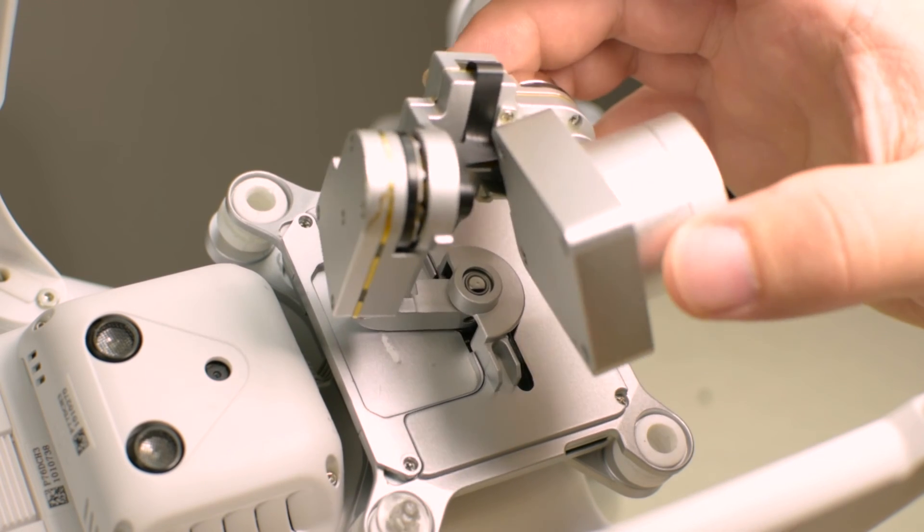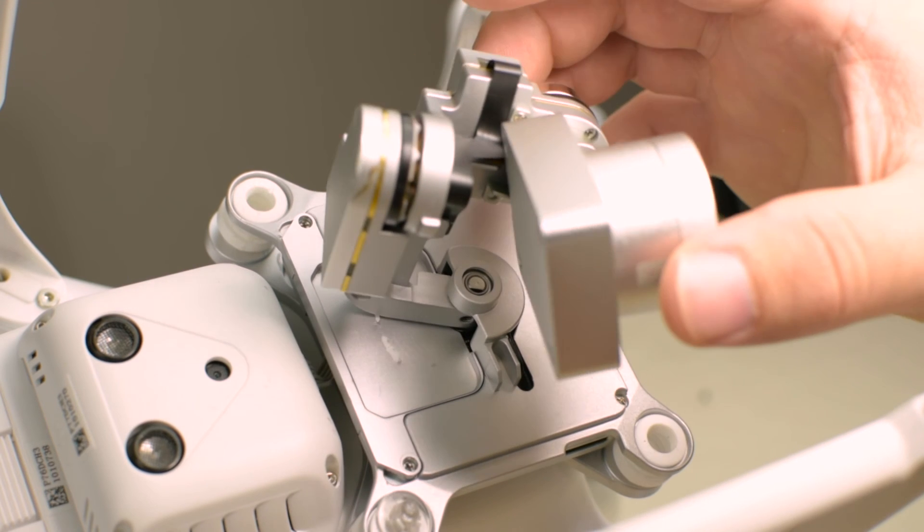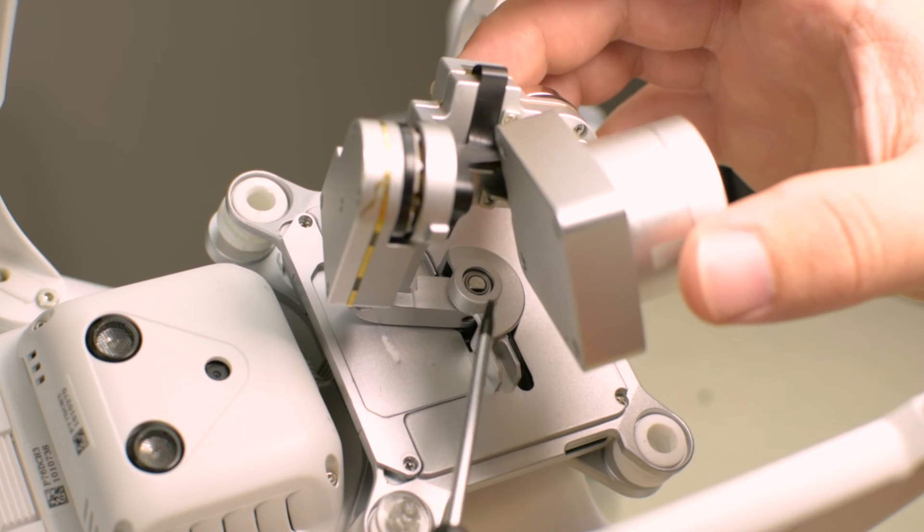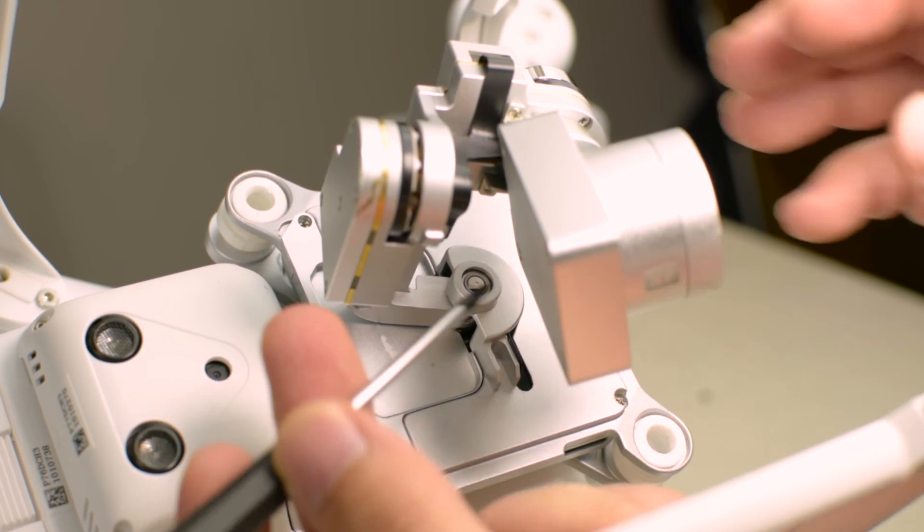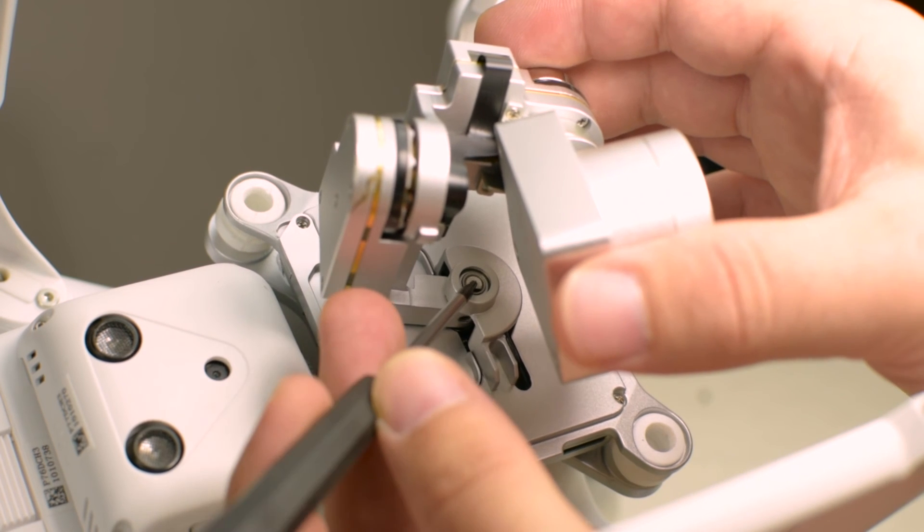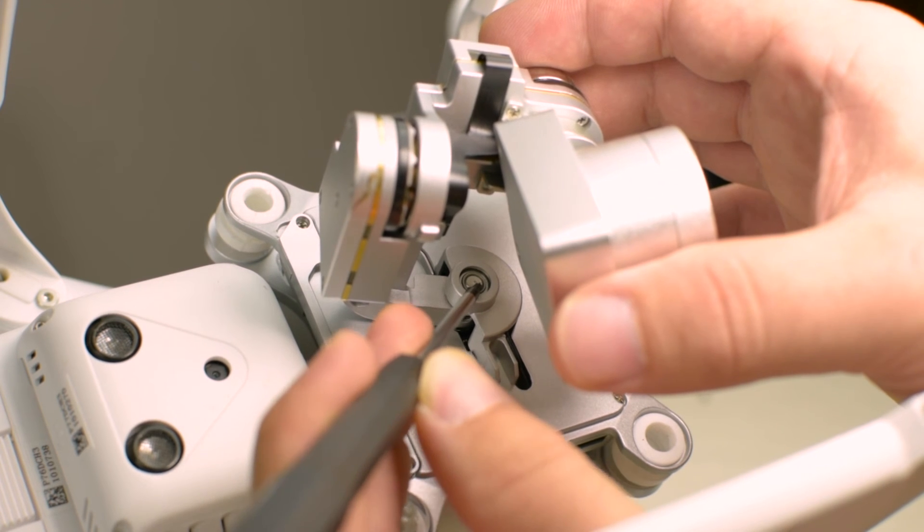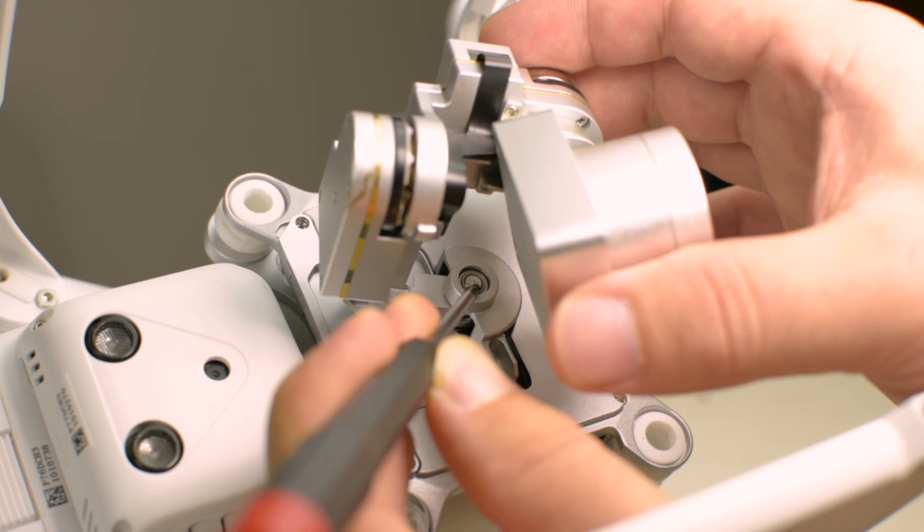And I didn't want that to happen, I want the shaft to remain put so that I can swivel this gimbal arm around it. So what I did was I just took this T6 screwdriver and pressed up against like this, up against the flat part with a pretty good amount of pressure and then I turned.